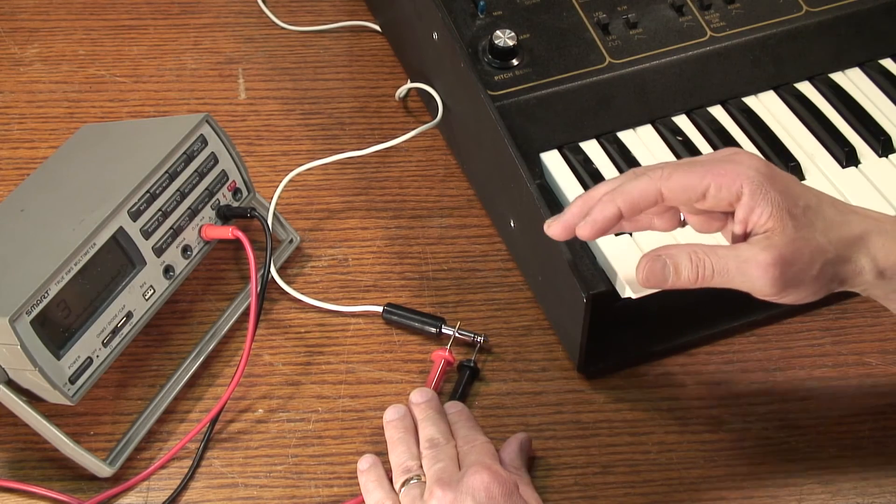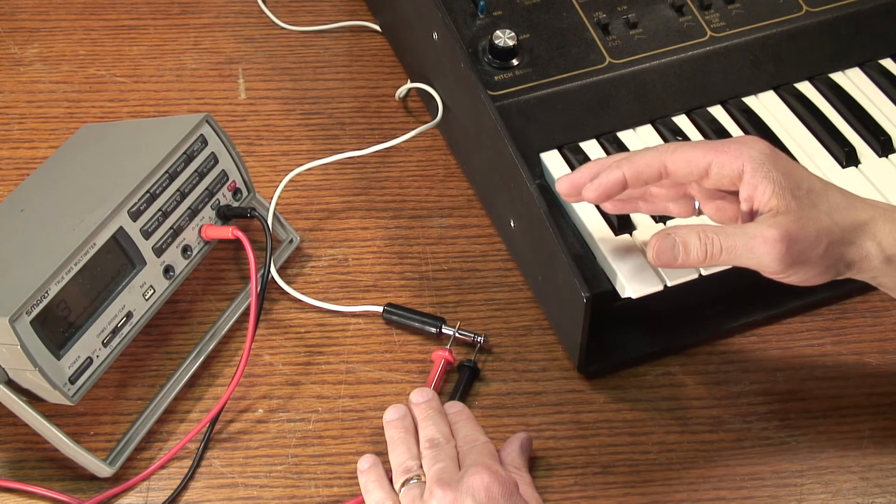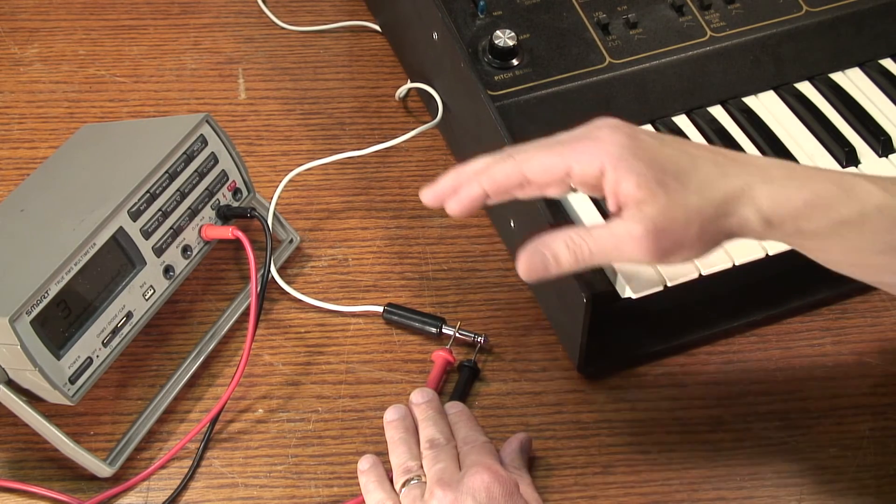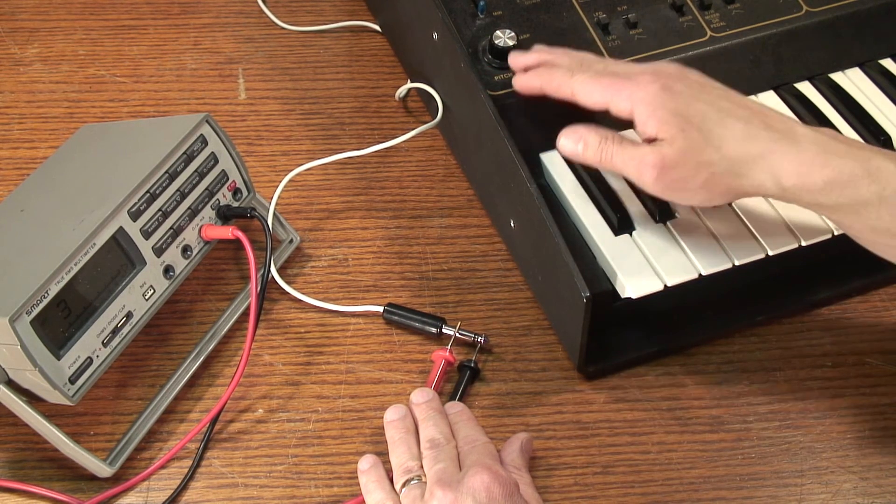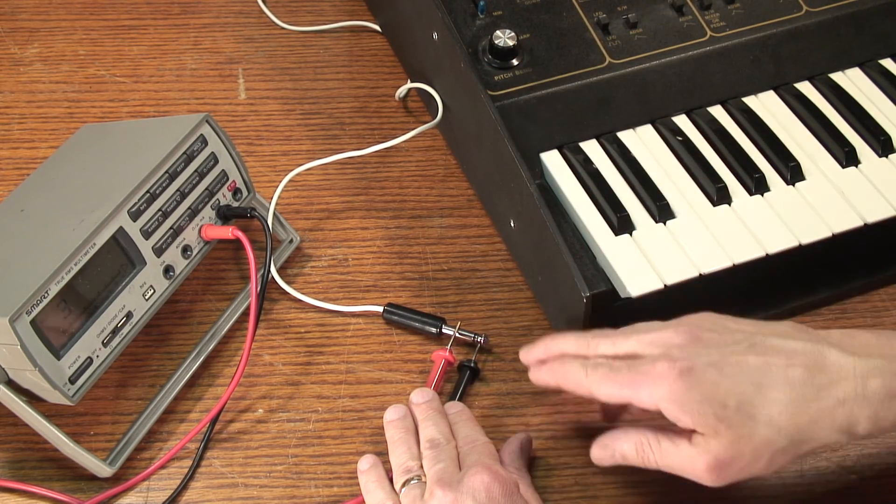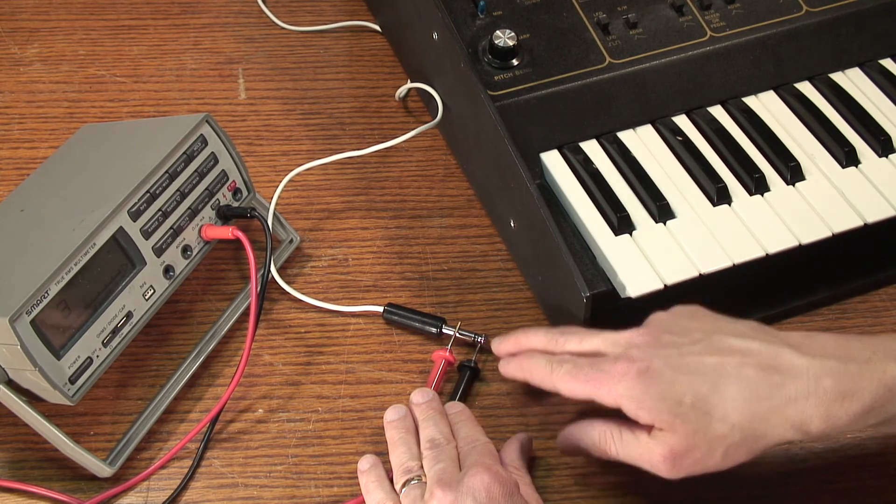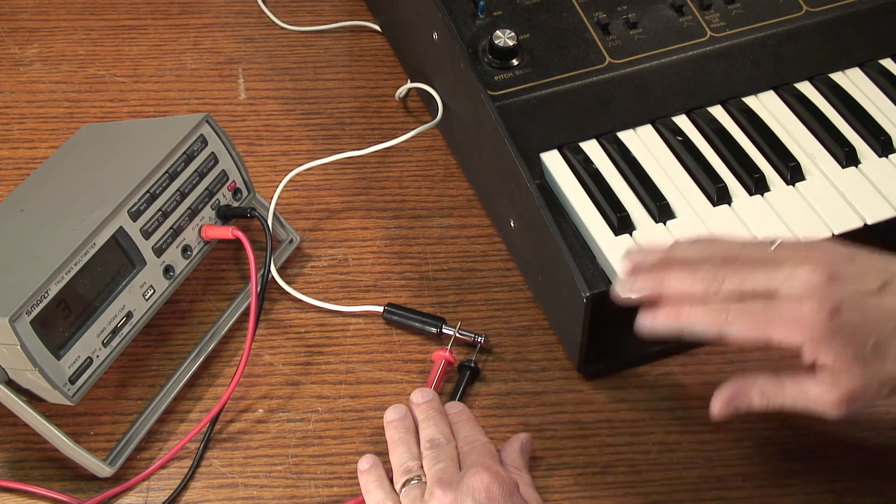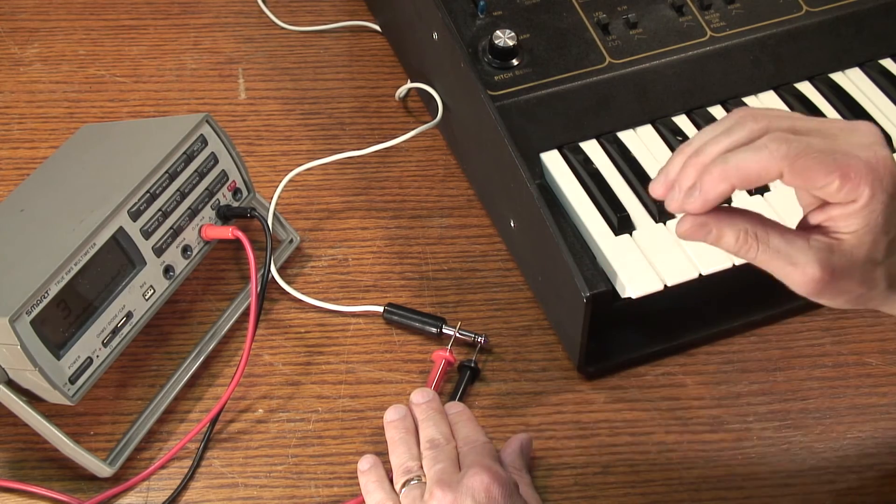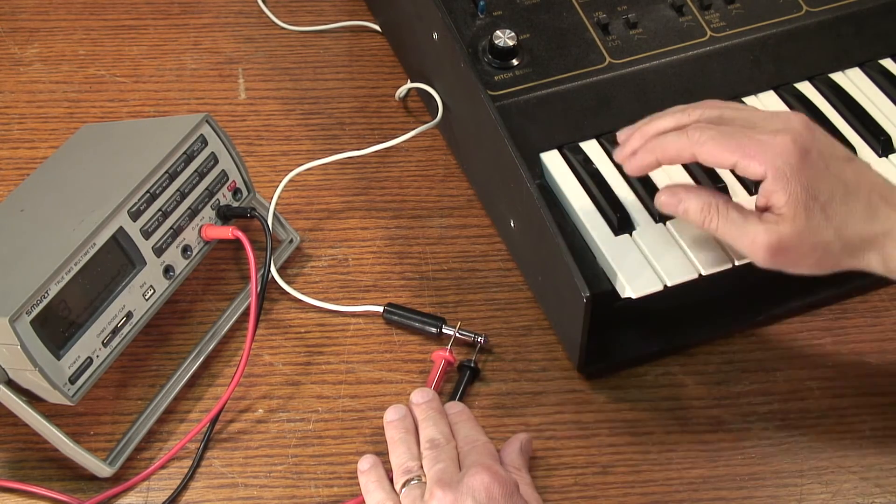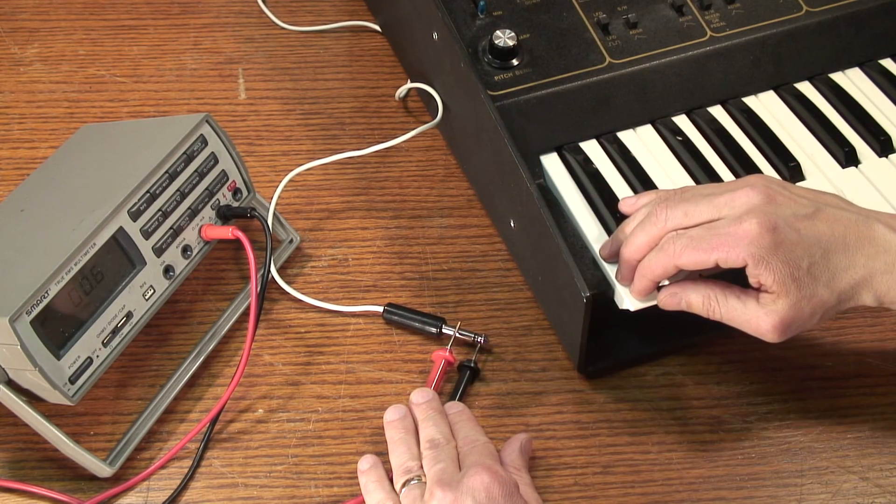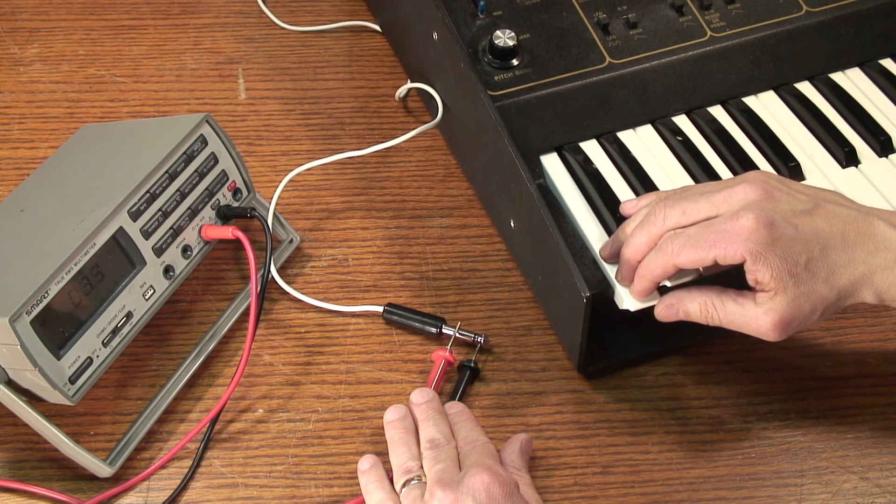It's always a good idea to test what you're working on before you put your tools away. And to do that, plug the V-trig end of the cable into a synth and probe the S-trig end of the cable with a continuity meter. With no keys down, it should be an open circuit so you won't hear a beep. When you push a key down, it should show a short circuit and you should hear the beep.